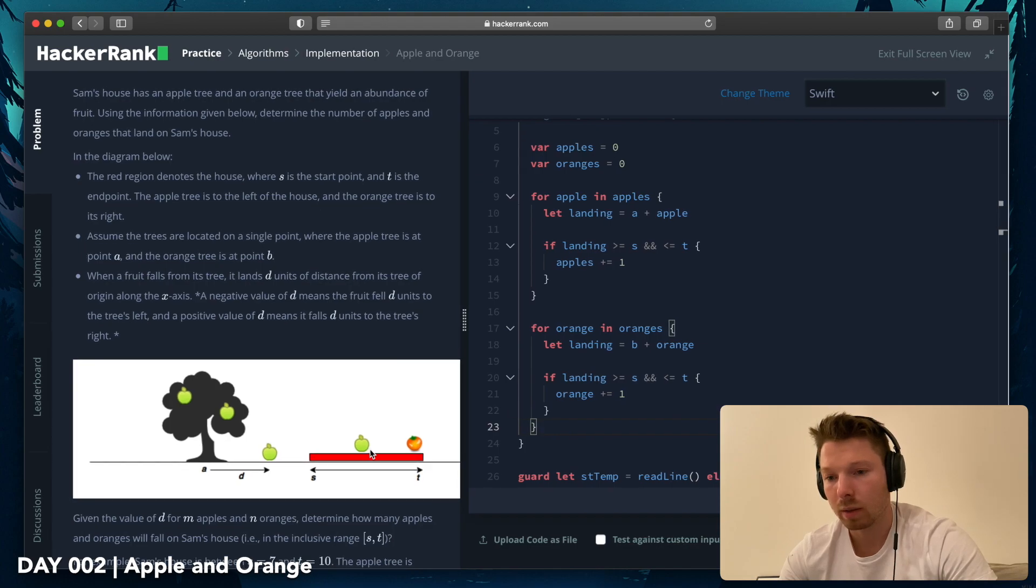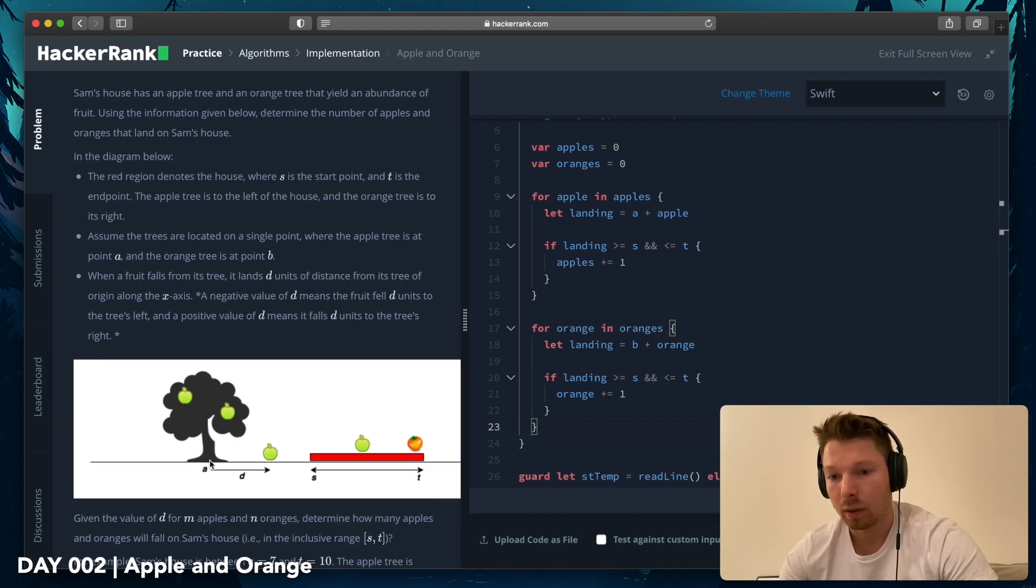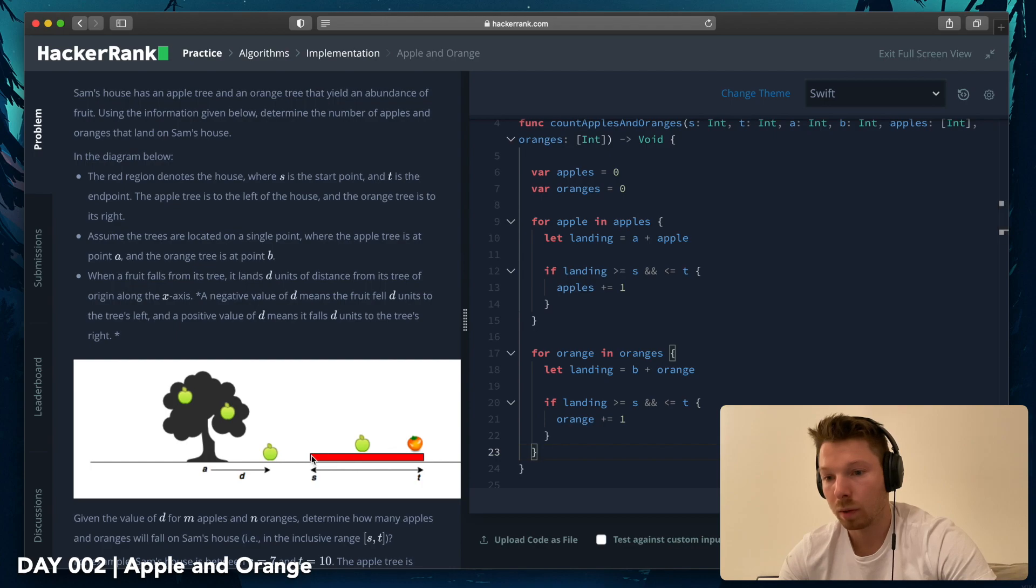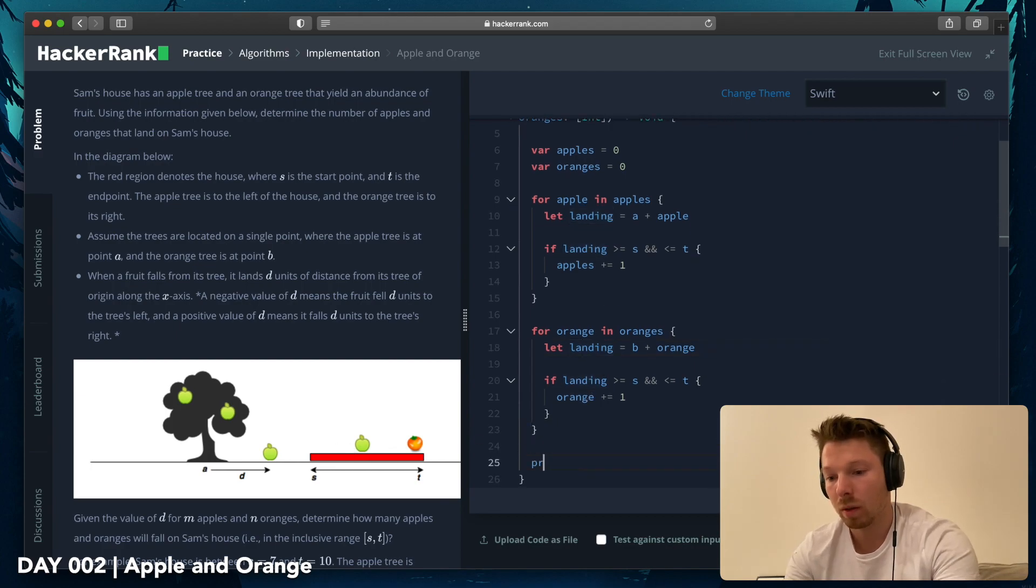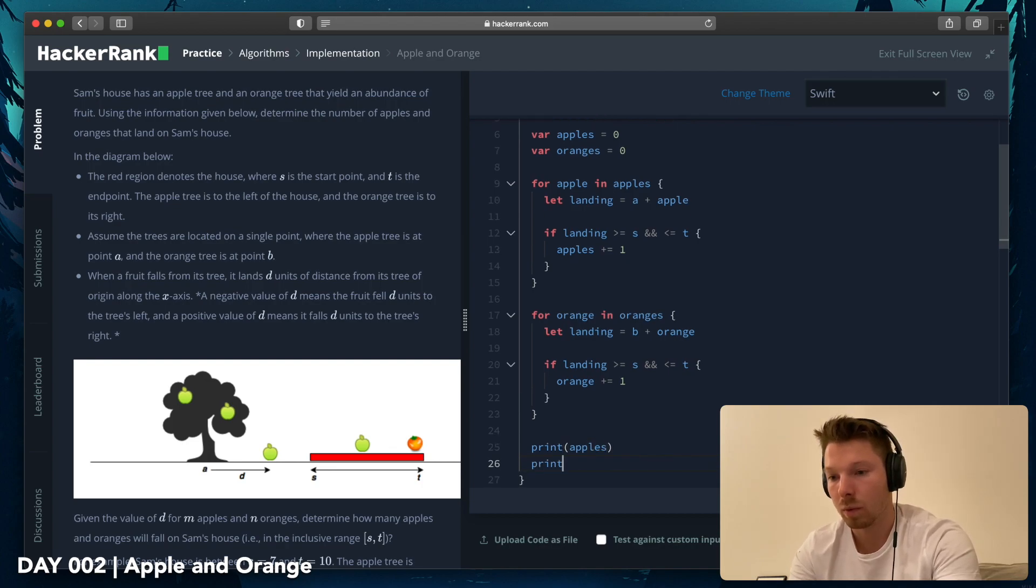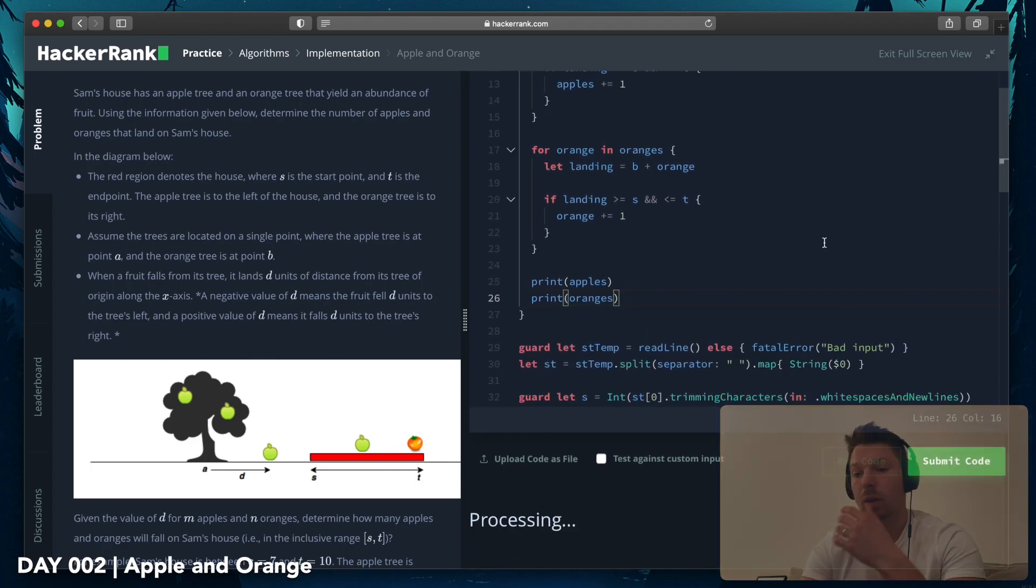I wonder if that's correct. So let's think about it for a second. So we have the apple distance that's plus whatever apple fell. And if it's bigger equal S and smaller equal T, yes. And the same for orange. And then we want to say print apples, print oranges, and run.